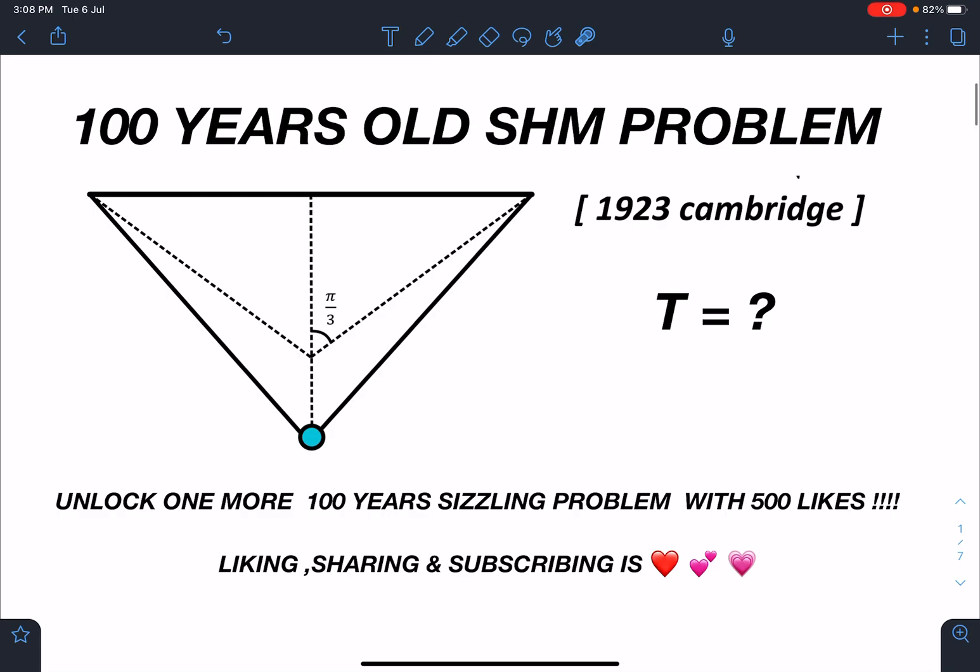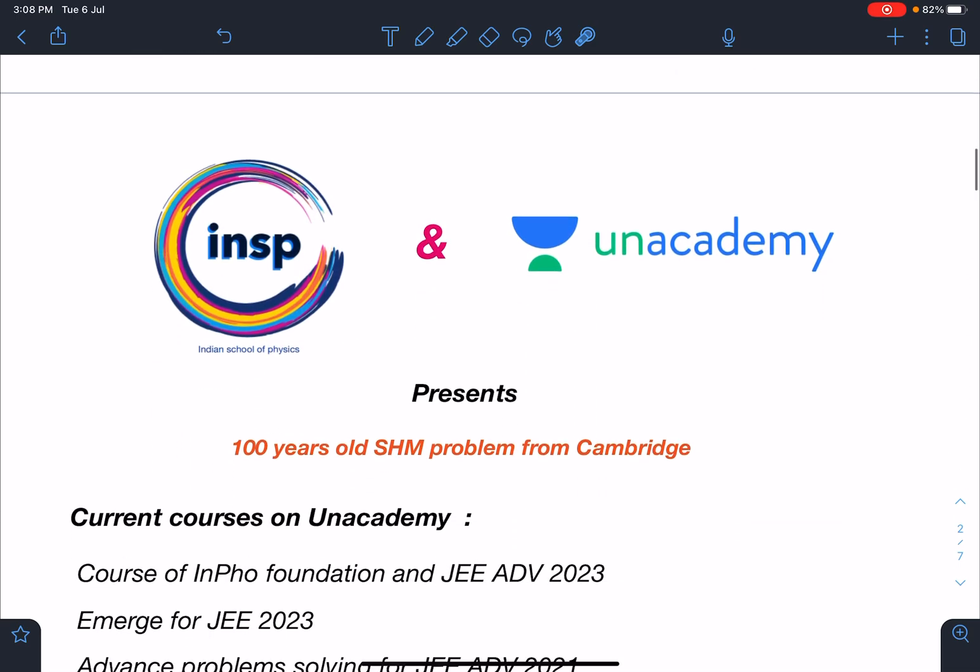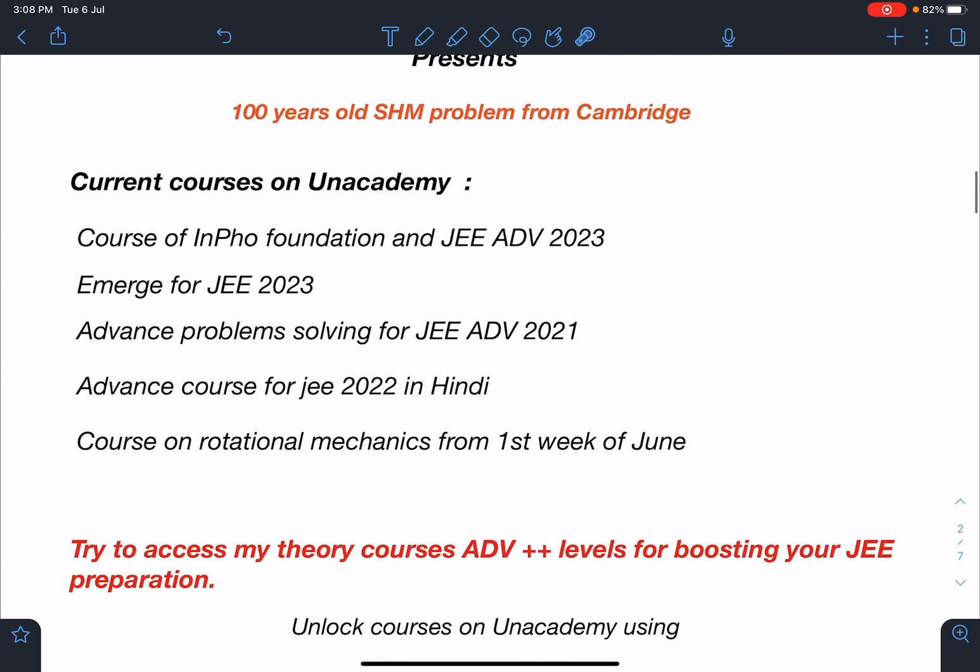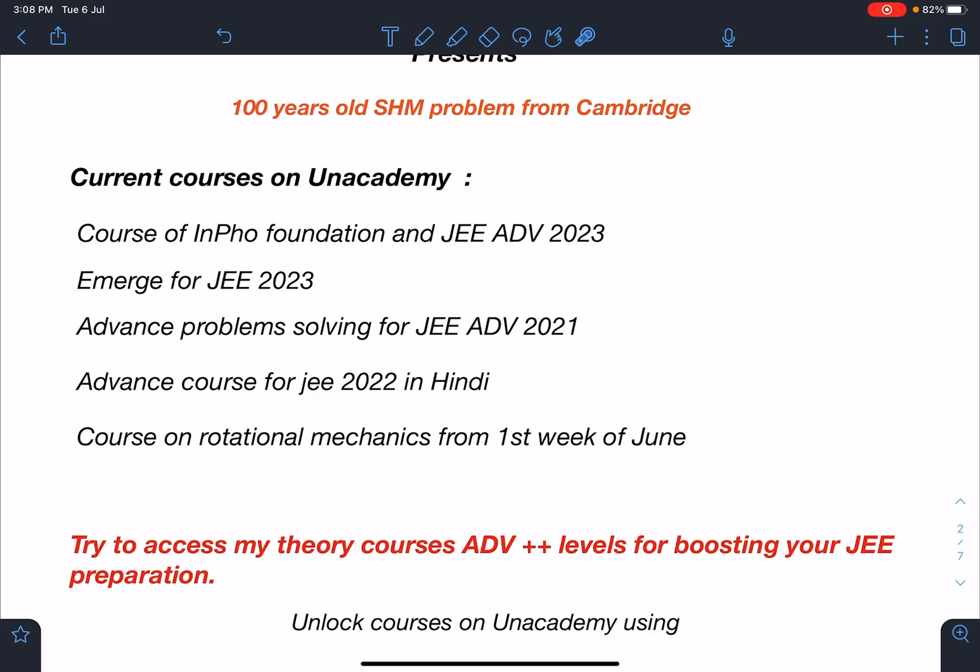This video is brought to you by Indian School of Physics and Unacademy together. My current courses on Unacademy are NP Echo Foundation, and for JEE Advanced 2023 we'll be starting circular motion and work power energy in a couple of days. Emerge for J23 batch, we will be starting kinematics within this week.